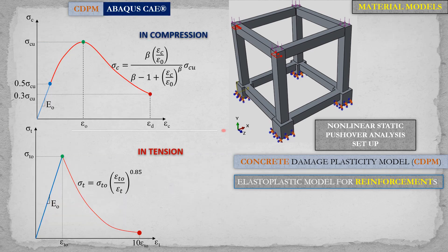This is a numerical investigation where we need to choose suitable material models. For example, for concrete we chose the concrete damage plasticity model in ABAQUS, and for reinforcement we chose an elastoplastic model.